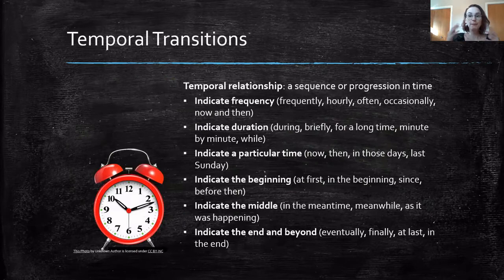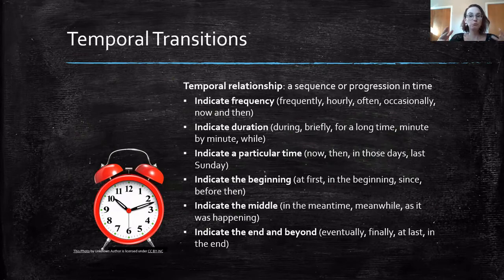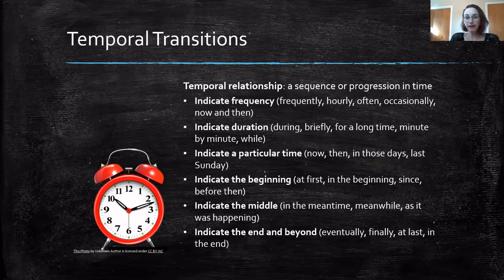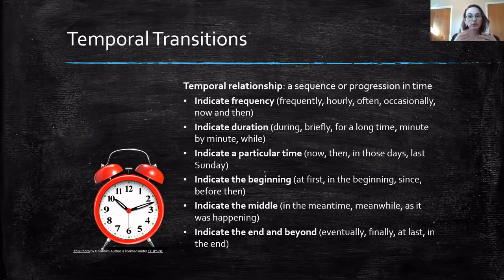The next type of transition is temporal transitions. When we're talking about temporal, we're thinking about time. It might talk about frequency — how often something is happening — or duration — how long something is happening. You might indicate a particular time, such as 'now,' 'last Sunday,' or 'in 2019.' You might also indicate the beginning, middle, and end: 'at first this happened, then that happened, and finally this happened,' thinking about moments in time, especially if you're telling a story.